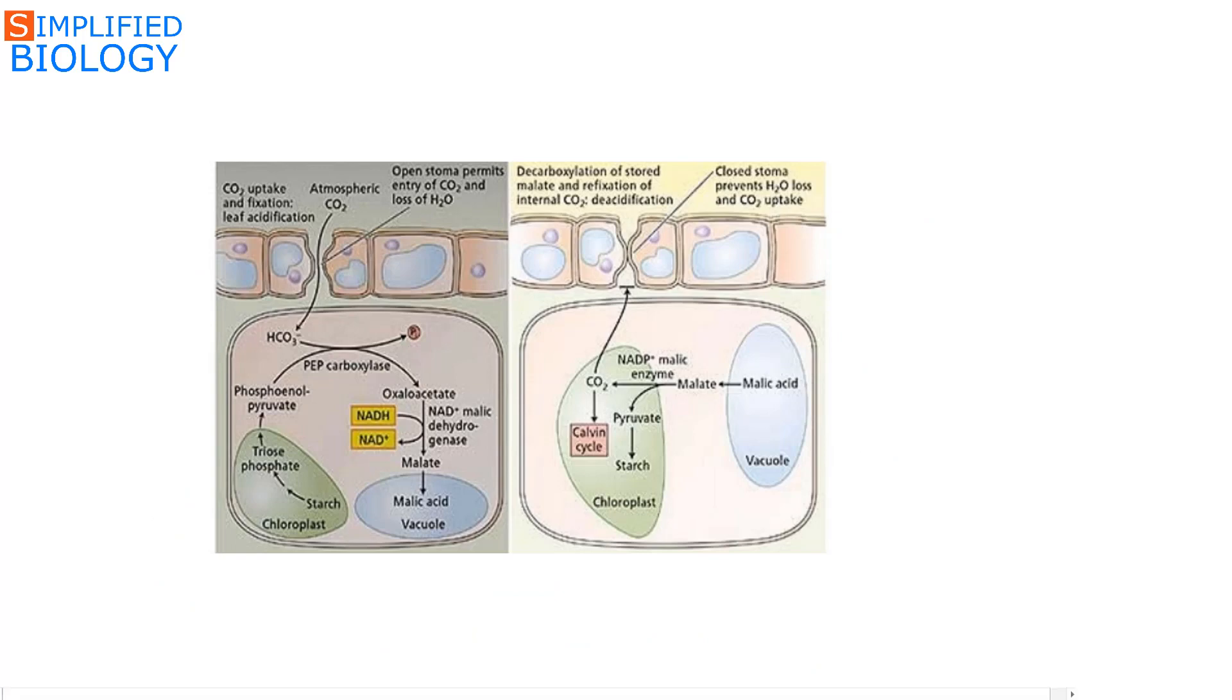During night, the carbon dioxide enters the leaves through the stomata that open at night. Even the carbon dioxide from mitochondria due to respiration is also present. They react with phosphoenol pyruvate by the help of phosphoenol pyruvate carboxylase enzyme to form oxaloacetic acid or oxaloacetate. This oxaloacetate, not being a very stable compound, is immediately reduced by NADH to form malic acid that is stored in the vacuole.